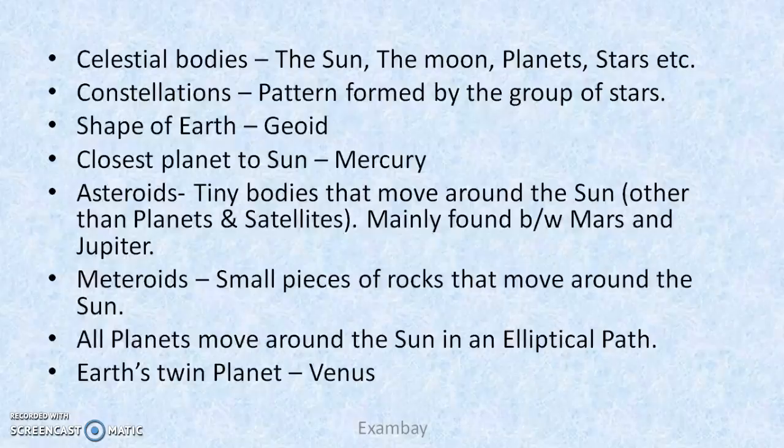Then we have constellations. What are constellations? Stars in patterns. Some examples: Ursa Major, then Big Bear, then Small Bear — Small Bear is Saptarishi, which has 7 stars. Then, the shape of the Earth is not round. Earth is not a sphere. Earth's shape is geoid. If you have a question, you can say geoid.